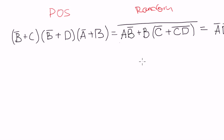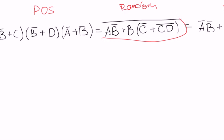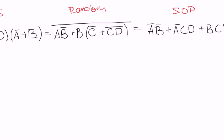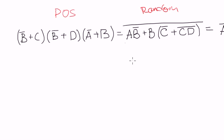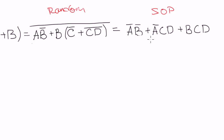You might think, how useful is that? This form is actually as useful as the sum of products form. All three expressions — our initial expression, the sum of products expression, and the product of sums expression — they all equal each other. In sum of products, if any term equals to 1, we don't need to calculate further, because 1 plus anything, even in algebra, equals to 1.